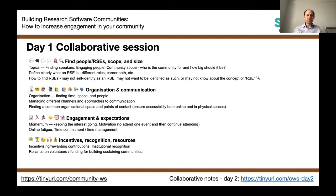These are actually the emojis that people assigned during the session, showing some great approaches to highlighting challenges. These are things we're going to hear more about today. Common challenges people faced — in building or participating in communities — can be summarized into four areas: finding people who want to engage, even though we know they're out there; RSEs embedded in research groups around institutions; issues around organization and communication; and how you manage that.